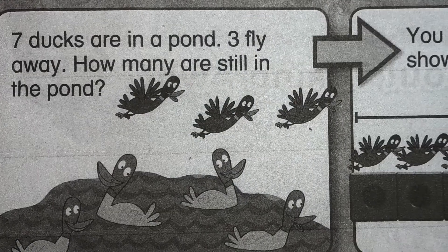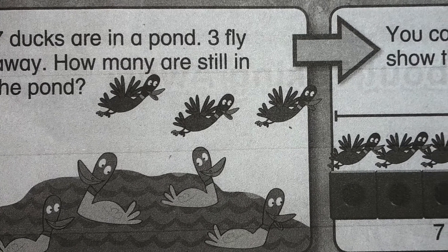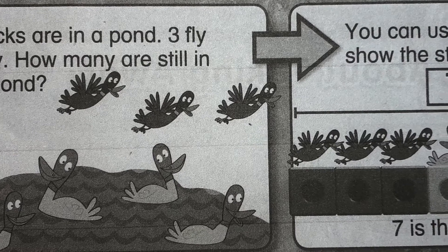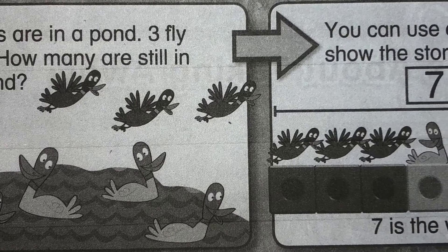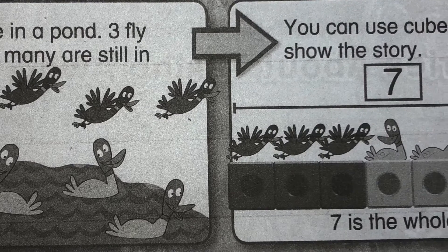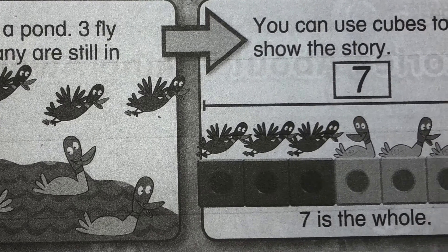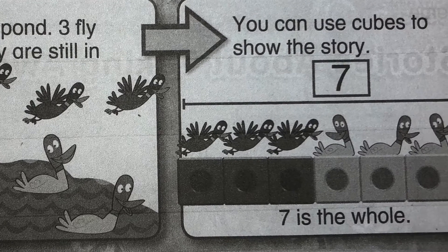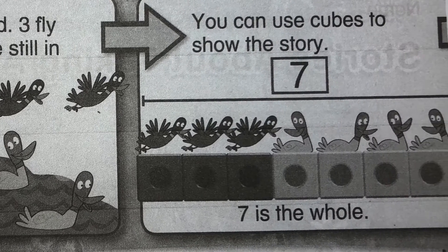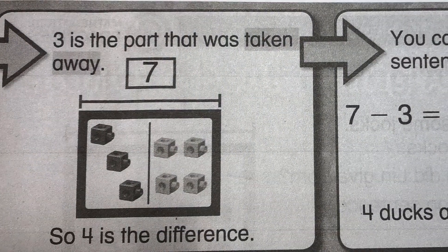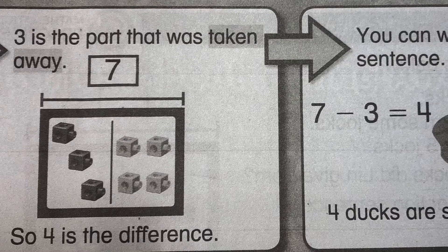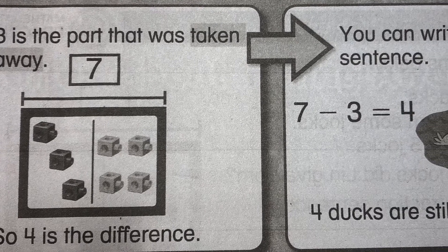Let's start with the story. It says seven ducks are in a pond; three fly away. How many are still in the pond? They chose to represent this with cubes. Seven is the whole — that's all the parts put together. Three is the part that was taken away.